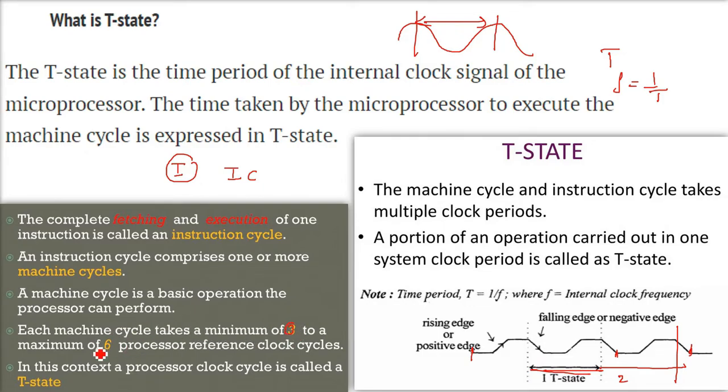In this context which we are discussing, a processor clock cycle is known as a T-state. T, you can say, stands for time.